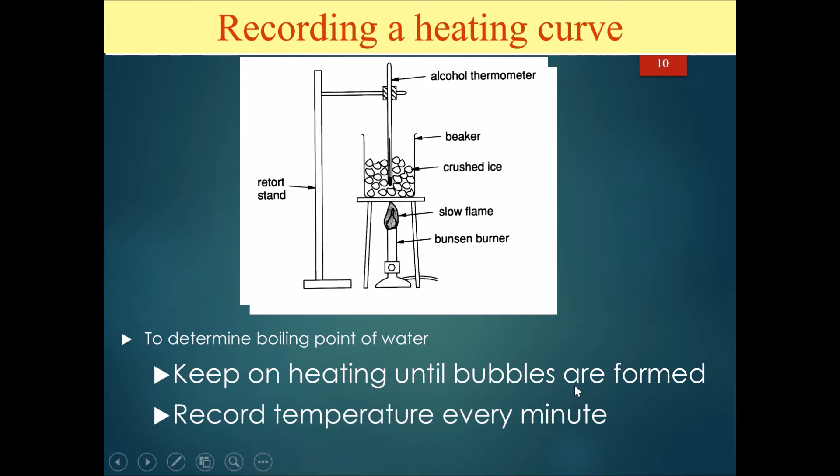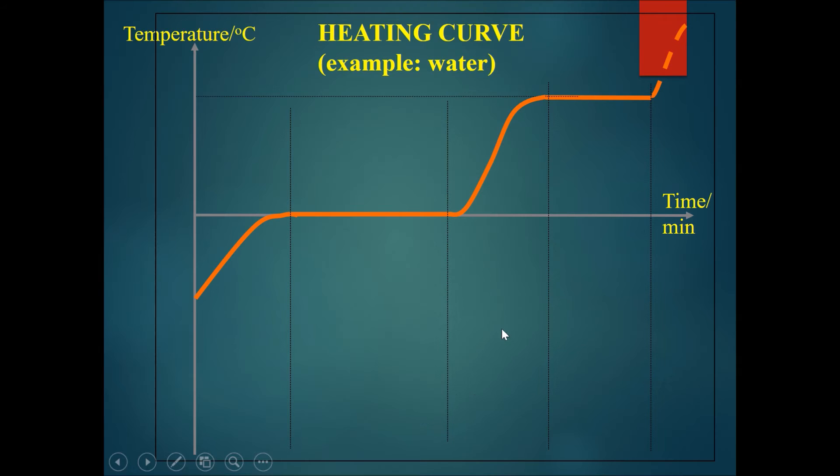If you do so you will get a graph something like this. This is called the heating curve. We are going to use water as an example. Over here is the solid. Basically we start off here at ice at maybe minus five or minus ten degrees celsius. When it's being heated the thermal energy will be gained from the surrounding and the particles will vibrate faster and faster.